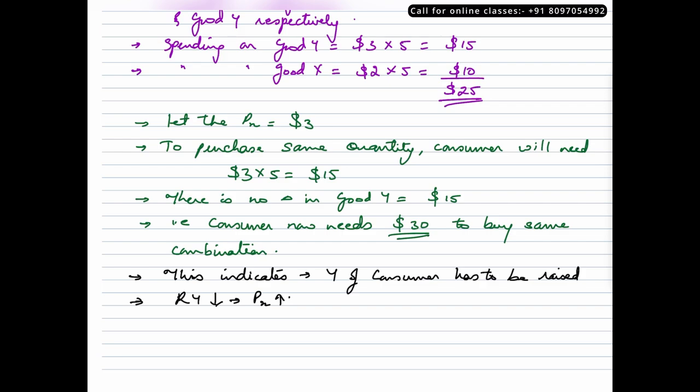And by how much do we need to raise the income? Since we are talking in terms of Slutsky's substitution effect, we know that he talks about cost difference. So what is the cost difference between $30 and $25? It is $5. So the money income of consumer has to be raised by $5.